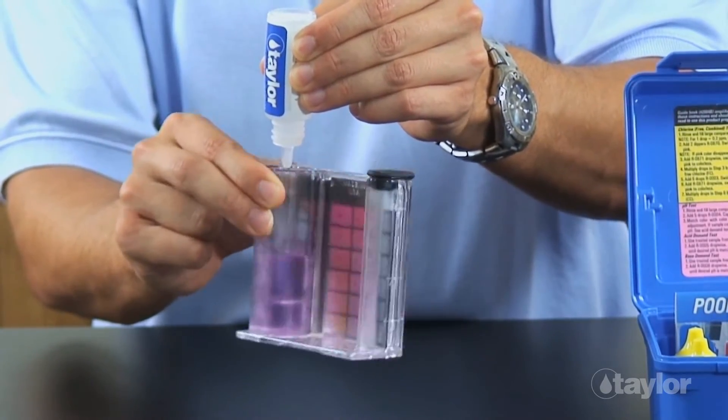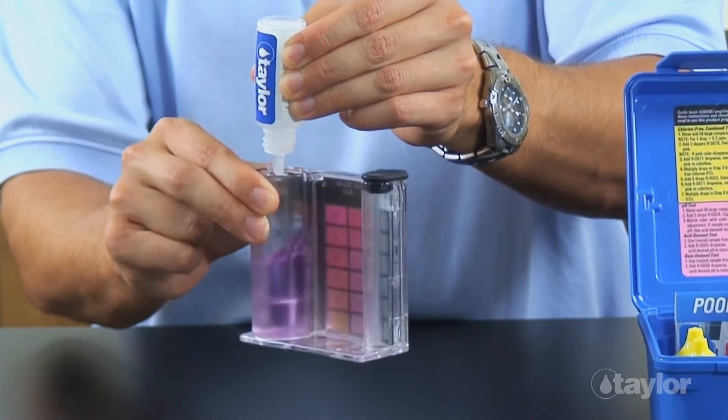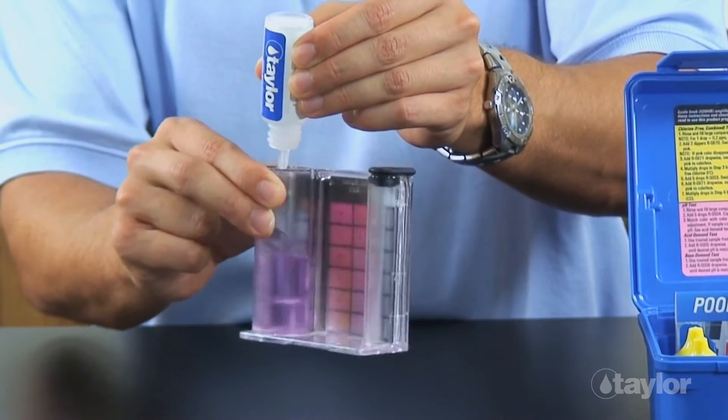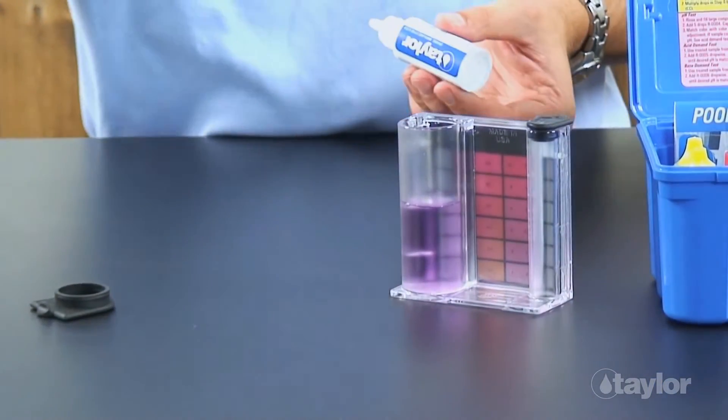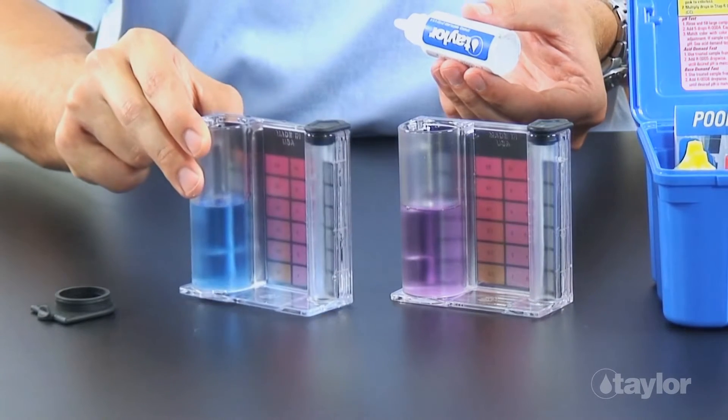This fading endpoint is due to interferences from metal ions, most likely copper or iron. Copper can enter the water from pipes, source water, or overuse of copper-based algaecides. Iron can be present in source water.